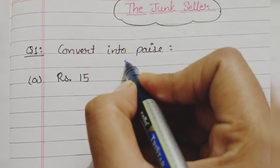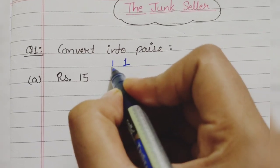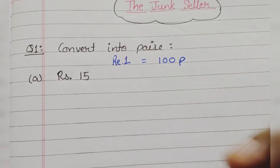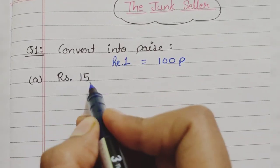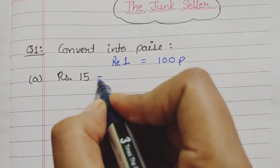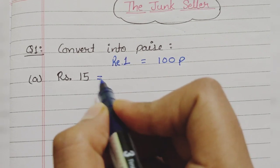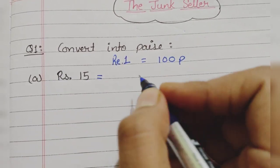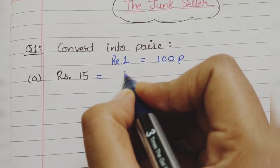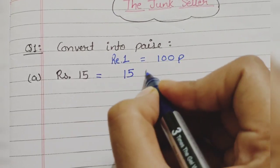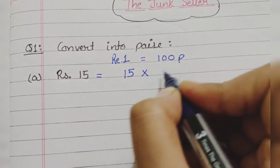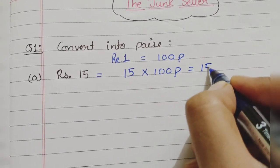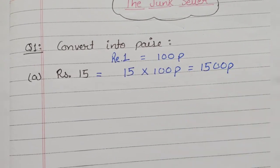We know that in 1 rupee, we have a total of 100 paise. So to convert 15 rupees into paise, we will replace this rupee by 100. It means we just need to multiply 15 by 100 paise, and your answer will be 1500 paise.